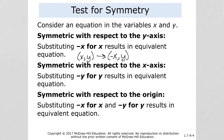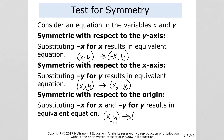For symmetry with respect to the x-axis, we substitute negative y for y. If you have the point (x, y), you end up with the point (x, -y). That explains why we substitute negative y for y and see if it results in an equivalent equation. Symmetry with respect to the origin means changing the sign for both x and y, so (x, y) becomes (-x, -y).